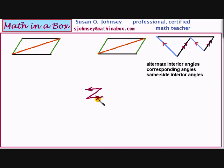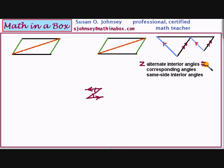These two angles here and here are the ones that are alternate interior. I'll put a little Z up here to help you remember. Alternate interior angles are congruent — that means their measurements are equal. We've studied this theorem that states that the alternate interior angles are congruent, and they create what I like to think of as a Z shape.